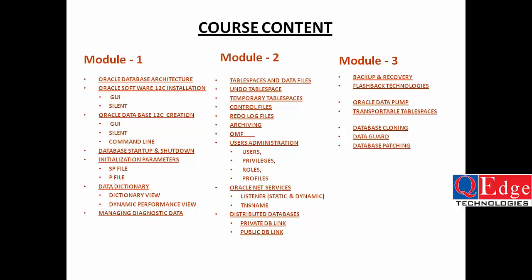Database patching covers applying small sets of programs to fix bugs and security issues. There are different patch types: interim patch, CPU patch, PSU patch, and rollback patch. Patches are released by Oracle Support quarterly. After understanding patching, we will cover database upgrades — how to upgrade from 11g lower version to higher version, both graphically and manually. Performance tuning is also covered — how to check the database's performance and hit ratio.